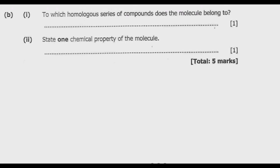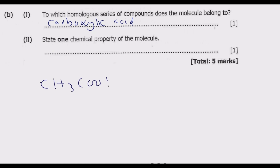Question B, Roman numeral 1: to which homologous series of compounds does the molecule belong? Like I said, this is a carboxylic acid — that's the family it belongs to. Remember the formula was CH₃COOH, so these are carboxylic acids.